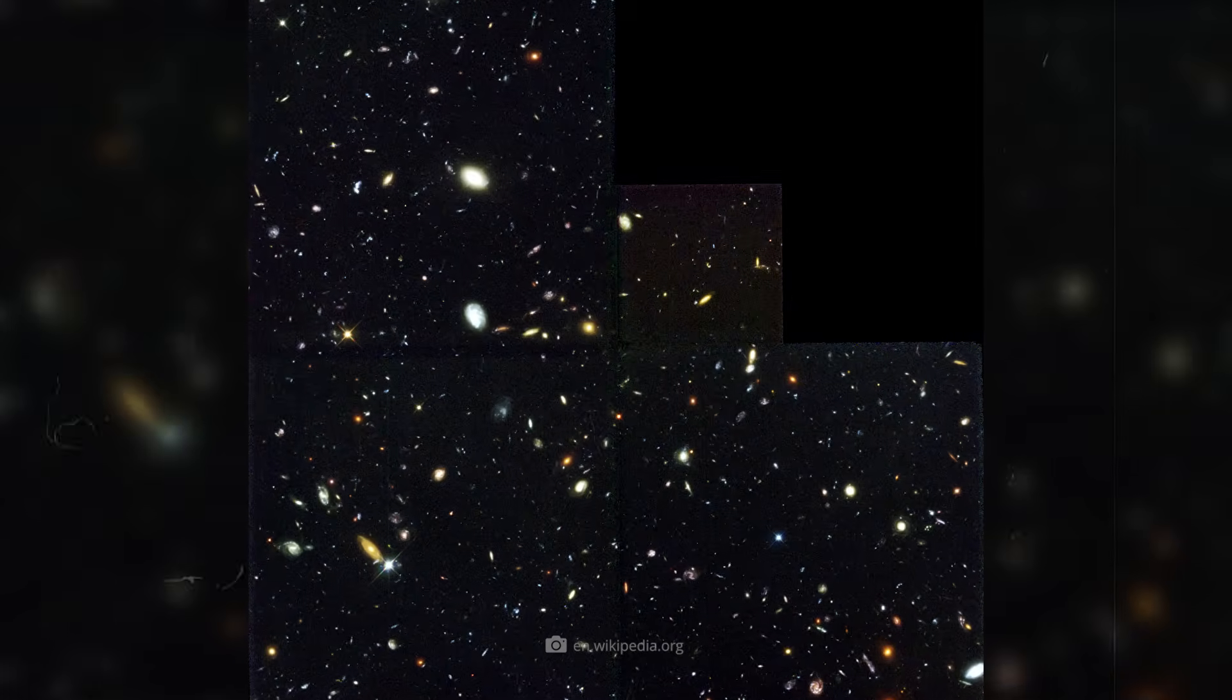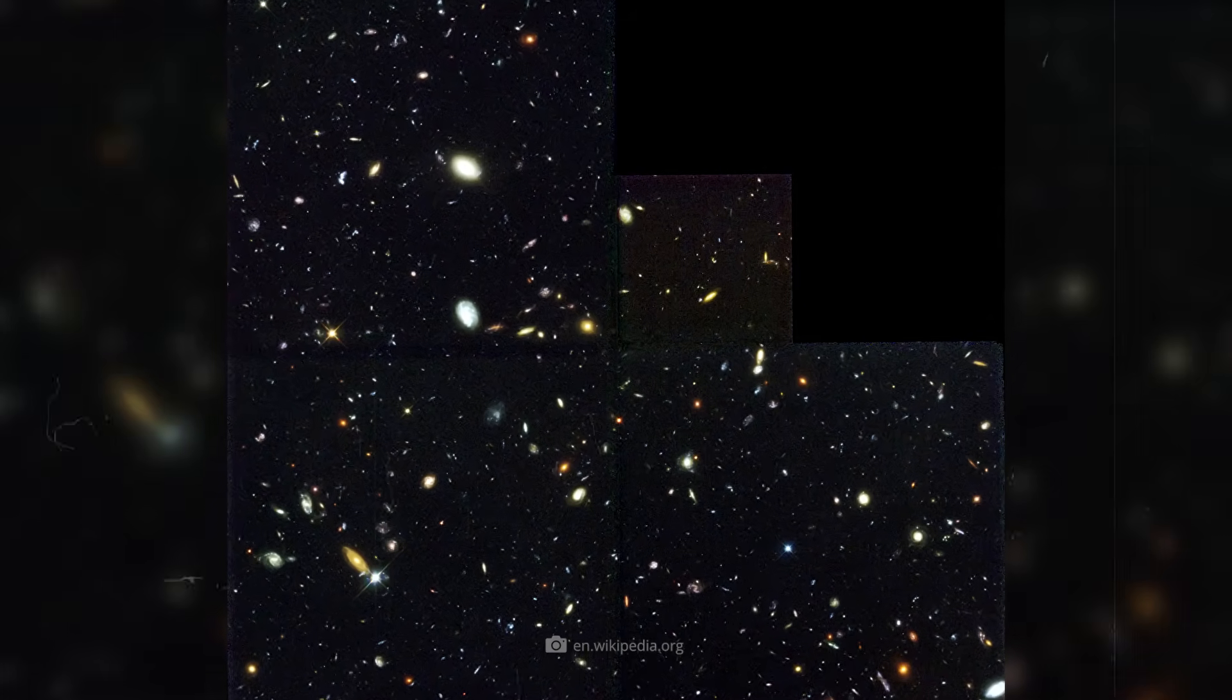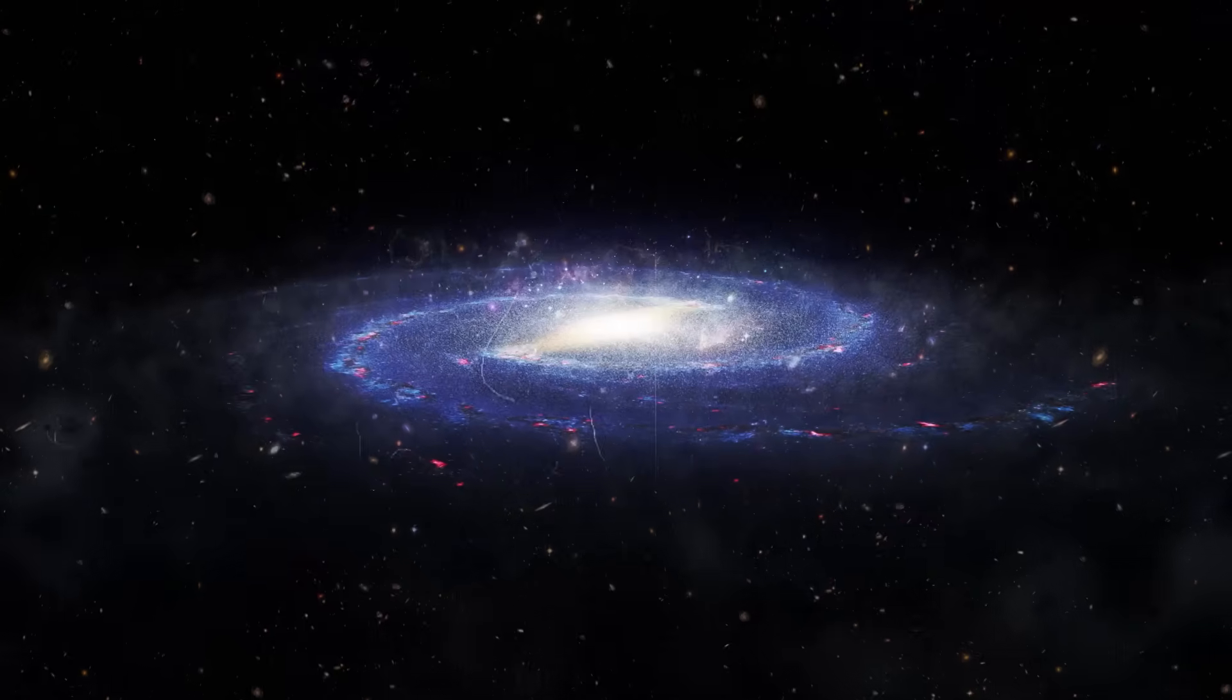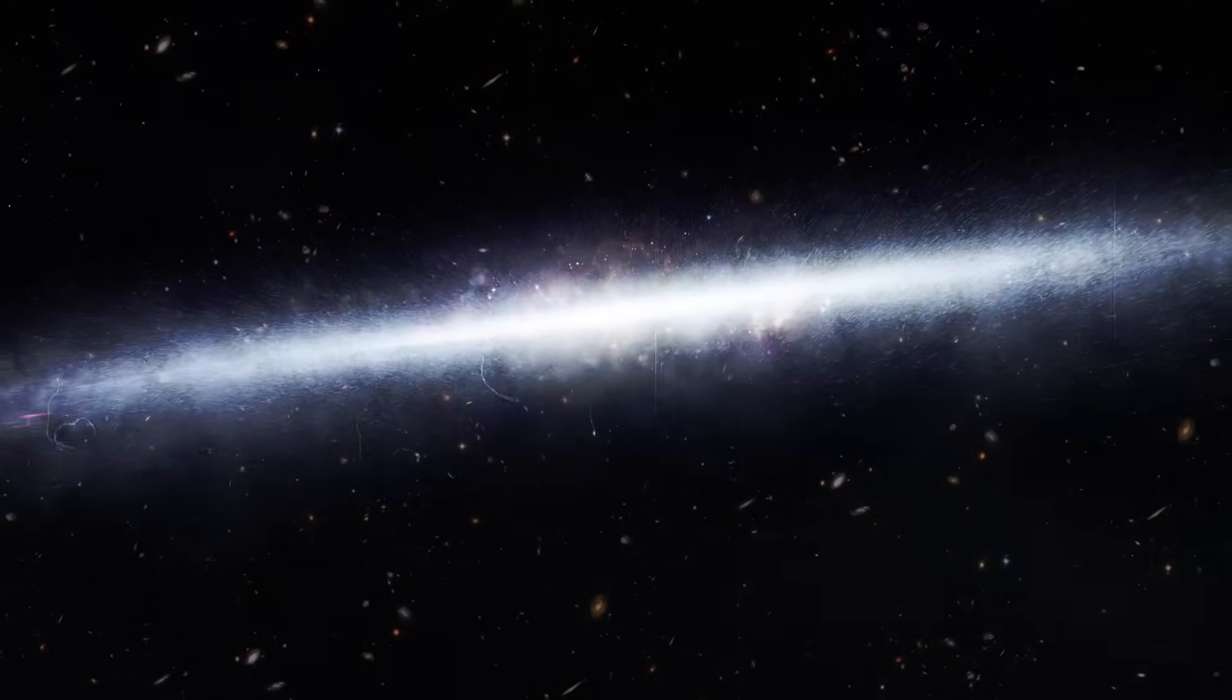When the images were finally assembled, the surprise was enormous. The Hubble Deep Field showed over 3,000 distant galaxies, and it quickly became apparent that some of them were more than 13 billion years old.